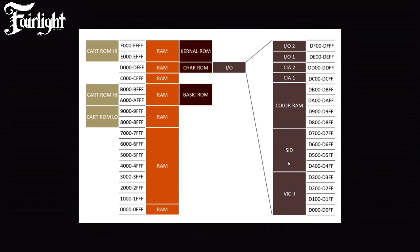SID is at D400. There are also SID extensions: if you have a second, third, or fourth SID in the machine, they can be populated somewhere in the memory space — that could be D5, D6, and D7 depending on configuration. Then we have CIA1 at DC00 and CIA2. CIA1 handles the keyboard and related I/O, while CIA2 takes care of serial communication. Then you have the two I/O slots for cartridges. Something like Action Replay uses both the DE block and the DF block. A RAM expansion unit has its register at DF00 — that's where you communicate to send data between the C64 RAM and the RAM expansion unit.